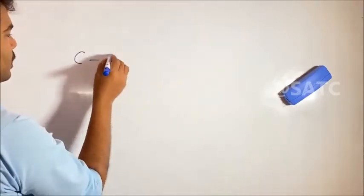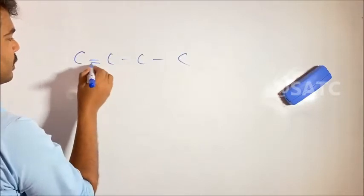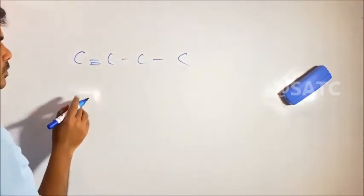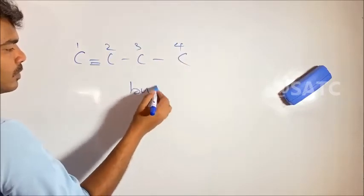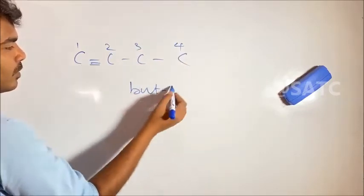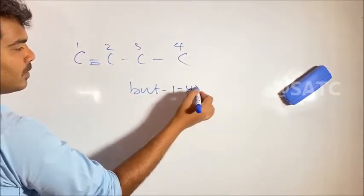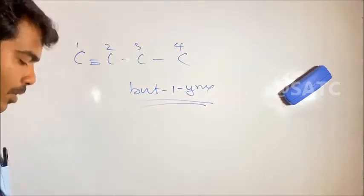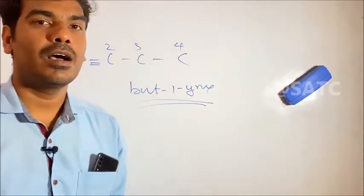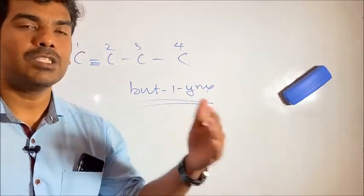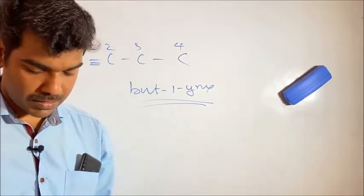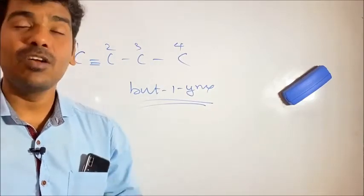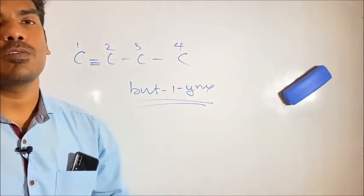Let's count: 1, 2, 3, 4 with a triple bond. Counting again: 1, 2, 3, 4. Next, we will look at cyclic compounds, so please visit the next video.